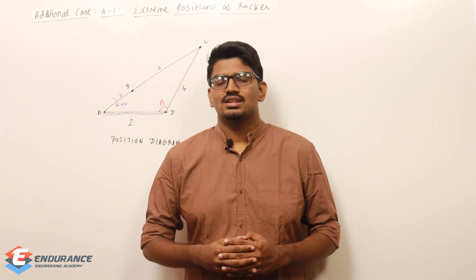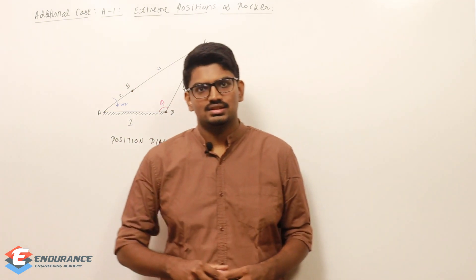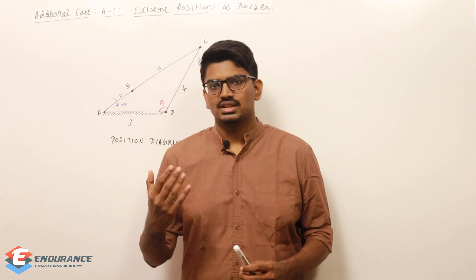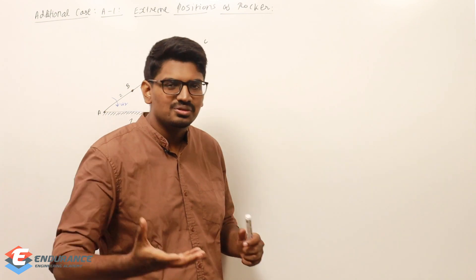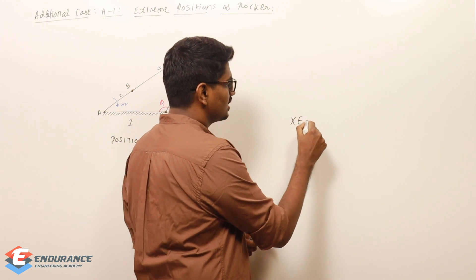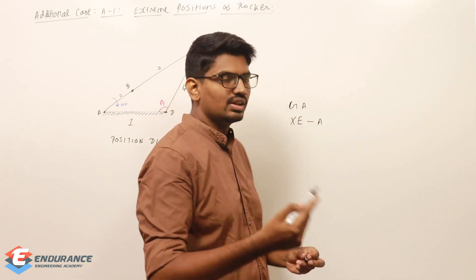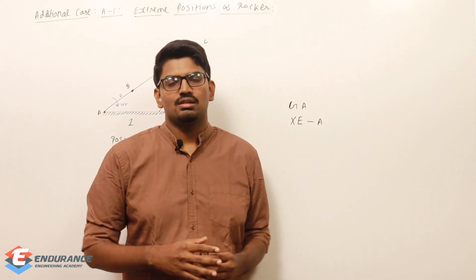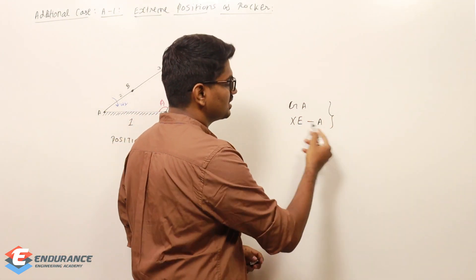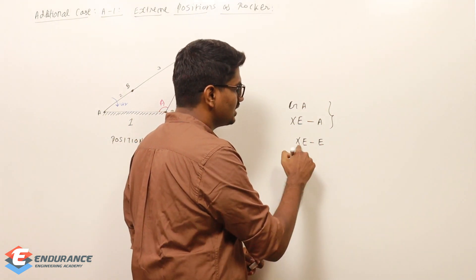The question is related to GATE Engineering Science. As we know, in the XE paper, XEA (Mathematics) and General Aptitude are compulsory. Out of the remaining optional papers, we need to select two. This student had already selected XEE (Thermodynamics) as one of his choices.